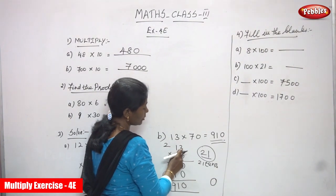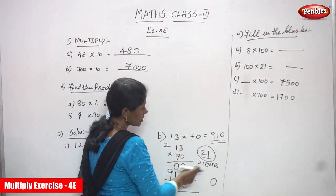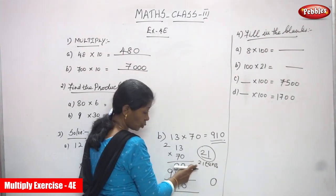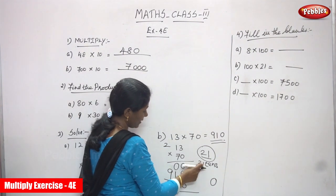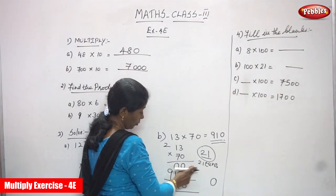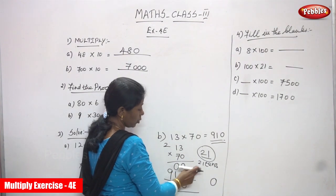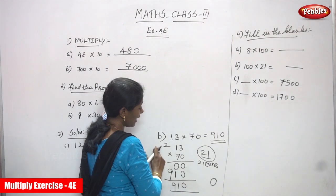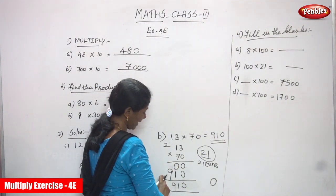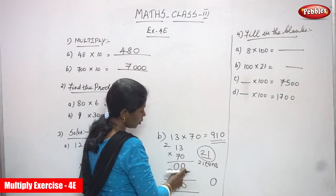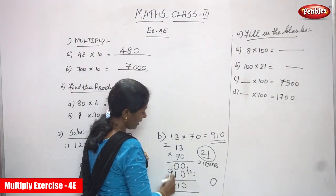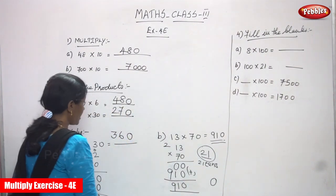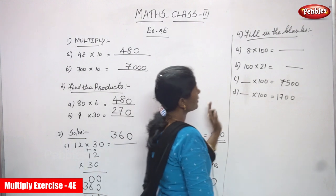Now multiply by 10: 7 into 3 — 7 threes are 21. That is 21 tens: 1 ten and 2 hundreds. Write 1 in the tens place, carry 2 to hundreds. Then 7 plus 2 gives 9. So the result is 0, 0, 1, 9 — the answer is 910. This is the right method and right answer.